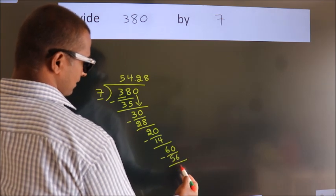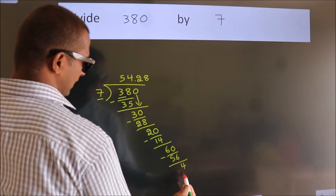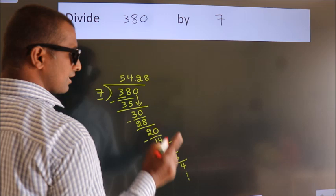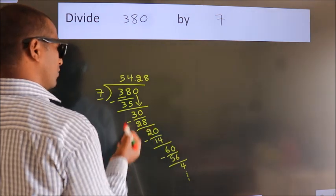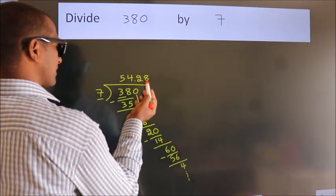Now we subtract. We get 4. And the division continues. It is enough if we do up to 2 decimal places.